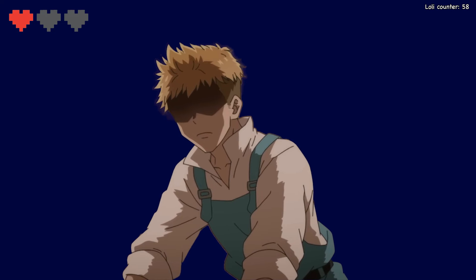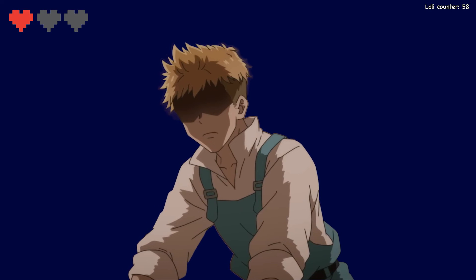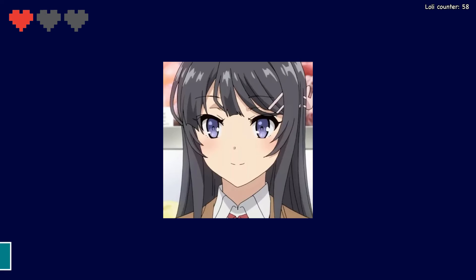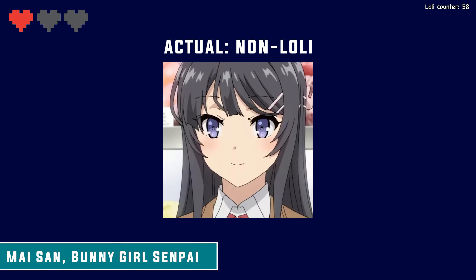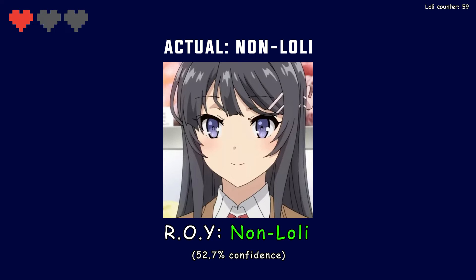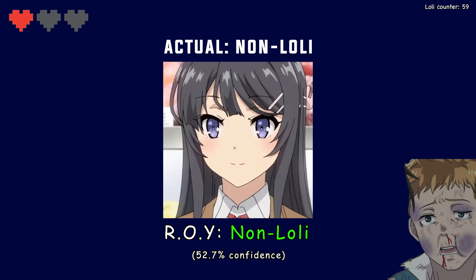We've done 10 characters so far and you've got two wrong, so let's hope that's your last mistake. 11th on our list is Sakurajima Mai from Rascal Does Not Dream of Bunny Girl Senpai — and despite the cringe name it's a banger of a show, so Roy, you better not get this one wrong. Roy says not a lolly with only 53% confidence — essentially a blind guess, but he has somehow clutched up. It seems Roy was super unsure about Mai, and I don't really know what caused him so much stress, but we'll take it.